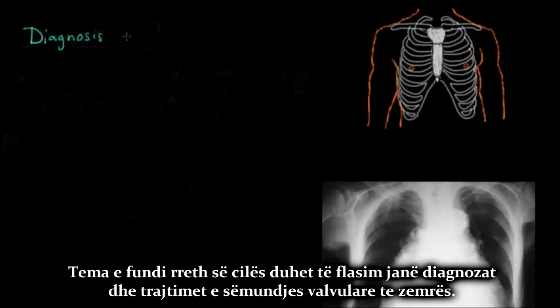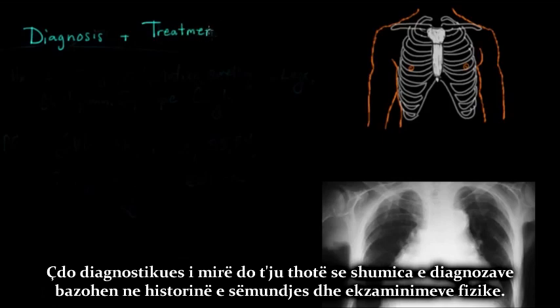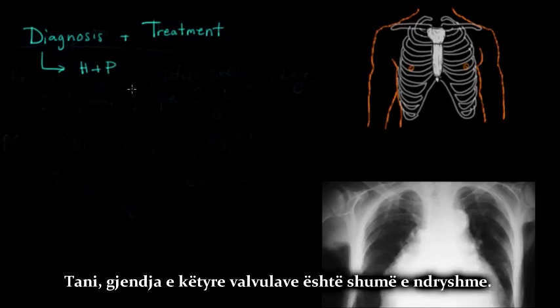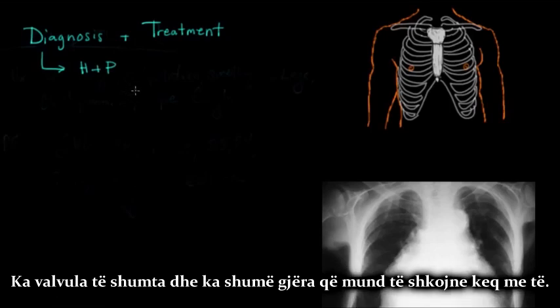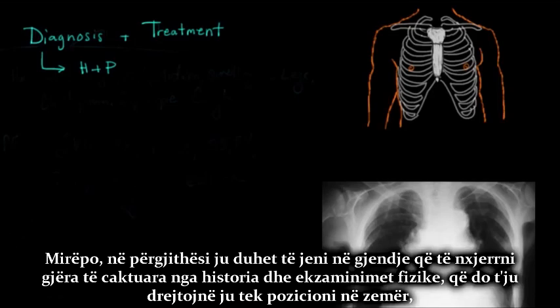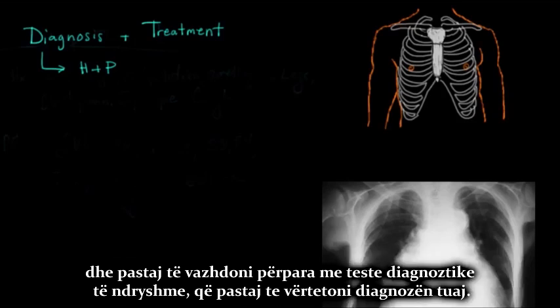The last topic we should talk about is the diagnosis and treatment of valvular heart disease. Any good diagnostician will tell you that the majority of diagnoses are based on a good history and physical. These valvular conditions are all very different — there are multiple valves and multiple things that can go wrong — but in general, you should be able to elicit certain things from a history and physical exam that point you toward the heart, and then move forward with diagnostic tests to confirm your diagnosis.